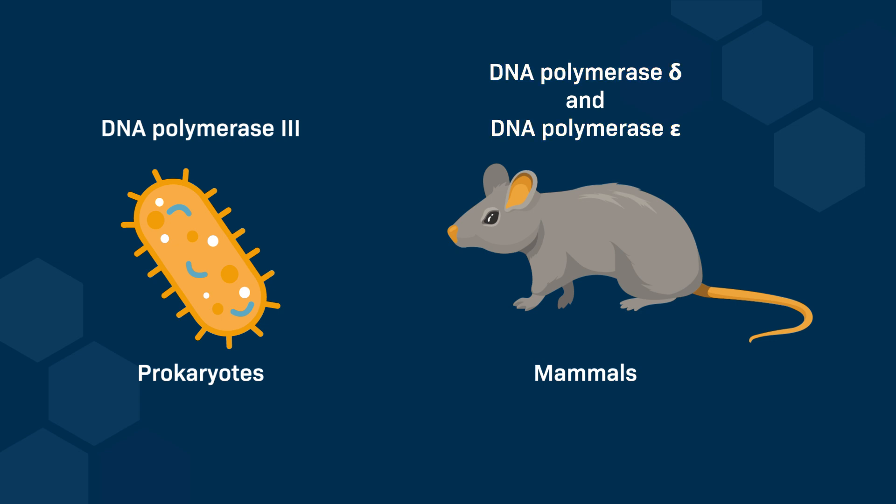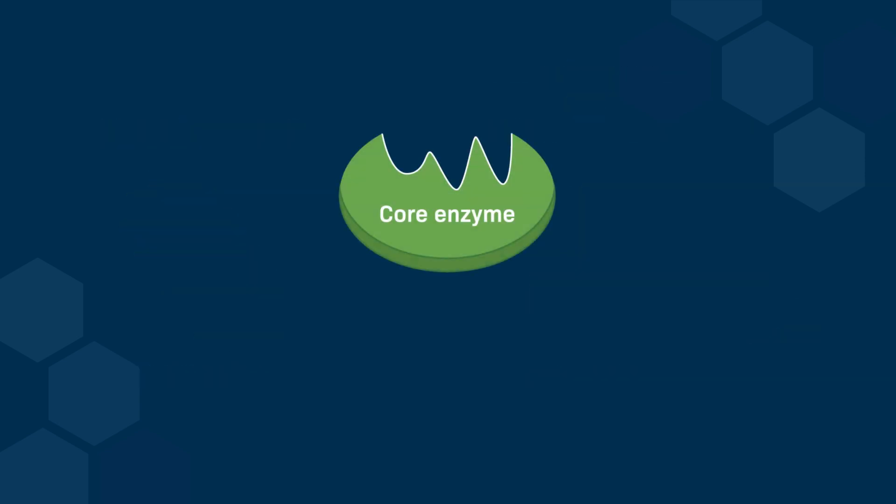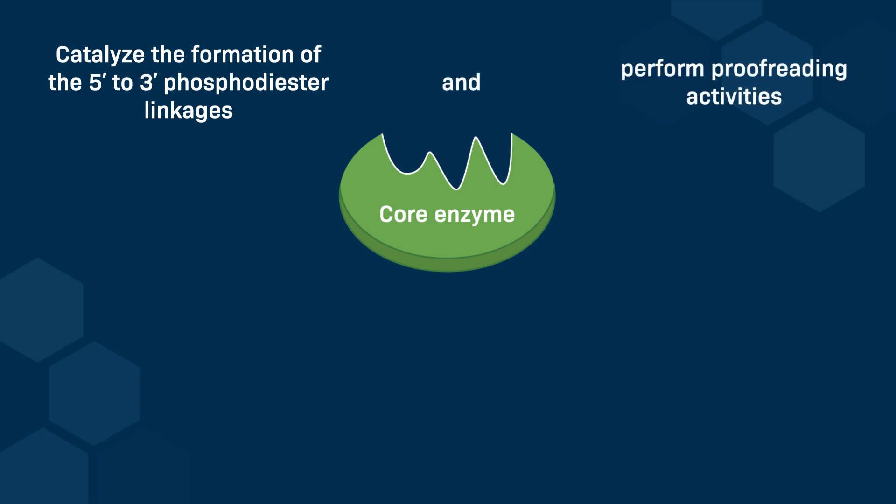Both prokaryotic and eukaryotic DNA polymerases possess what are referred to as core enzymes. These core enzymes are crucial because they catalyze the formation of the 5' to 3' phosphodiester linkages, perform proofreading activities, and have three essential substrates.